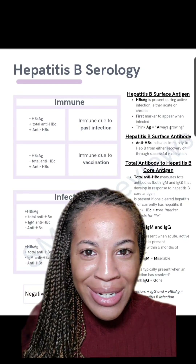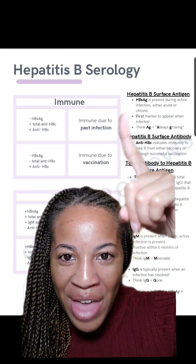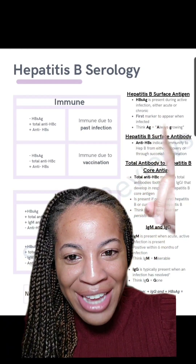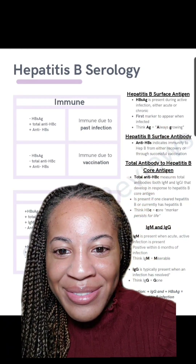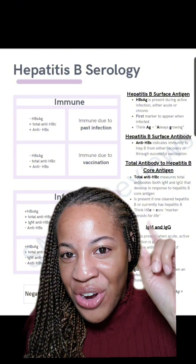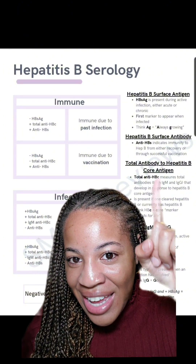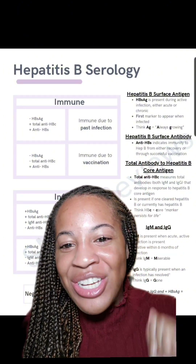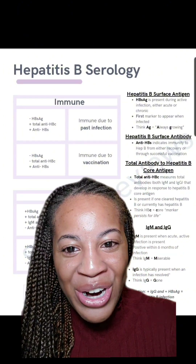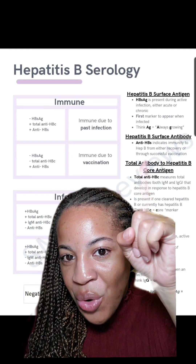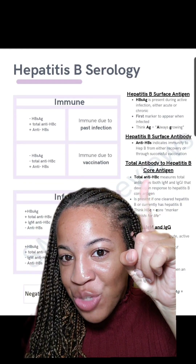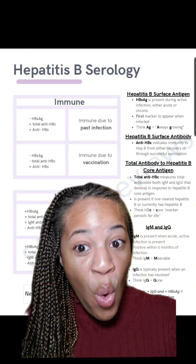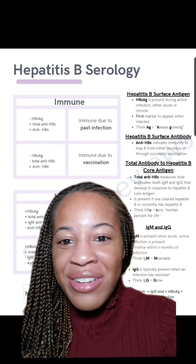HBsAg — that is your hepatitis B surface antigen. Your Anti-HBS, that is your immune marker. Your total Anti-HBC, that is going to be your core marker.